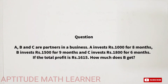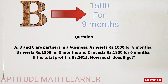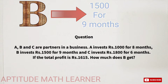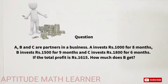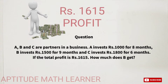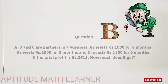A invests rupees 1000 for eight months, B invests rupees 1500 for nine months, and C invests rupees 1800 for six months. If the total profit is rupees 1650, how much does B get? So here we have to find out the profit for B.